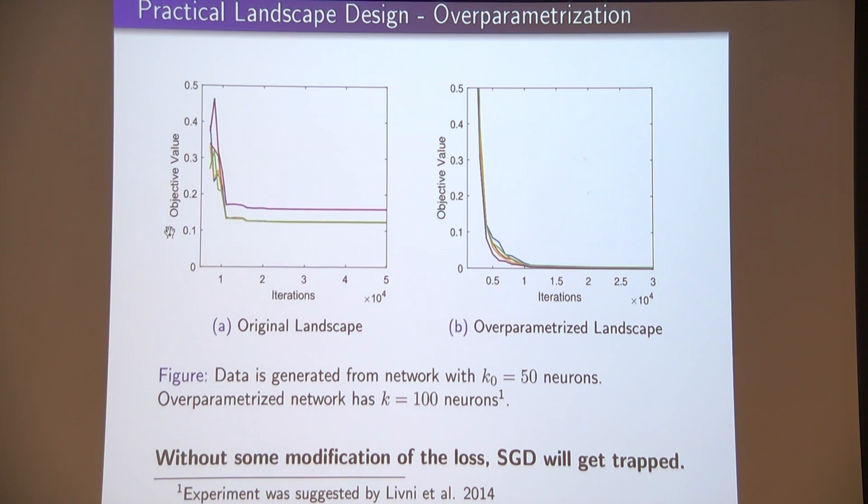They're very close loss value, but you can check they're not permutations of each other. The teacher network has 50 neurons. I changed my model now to have 100 neurons. So it contains it as a subclass, but it's overspecified.